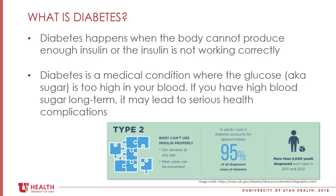Let's review what diabetes is. Diabetes happens when the body cannot produce enough insulin, or the cells are resistant to insulin, or the insulin is not working correctly. That sugar then stays in the blood versus going into the cell. Diabetes is a medical condition where the glucose or the sugar is too high in your blood. If you have high blood sugar long term, it can lead to some serious health complications that we discussed earlier.